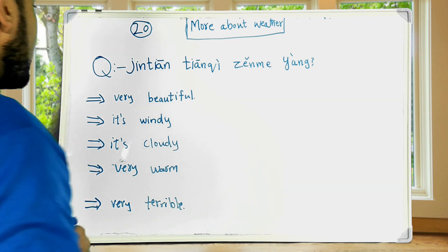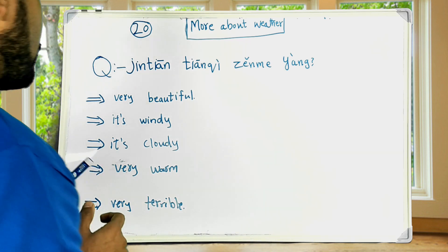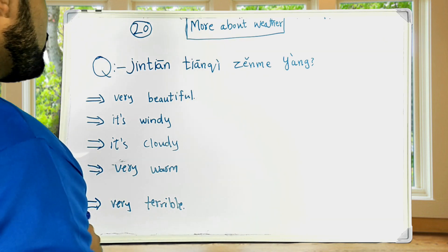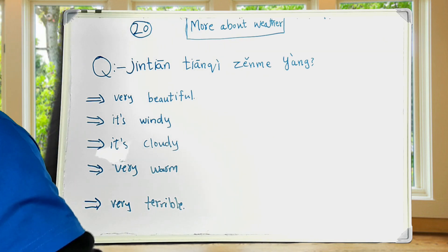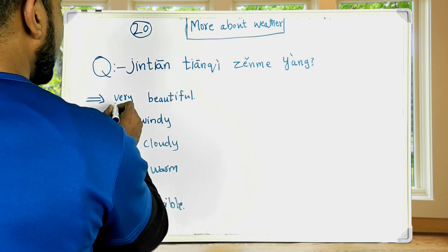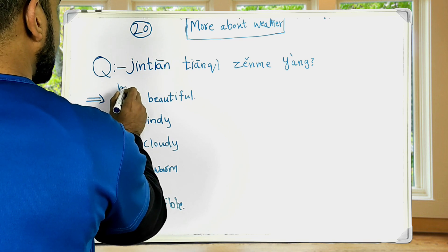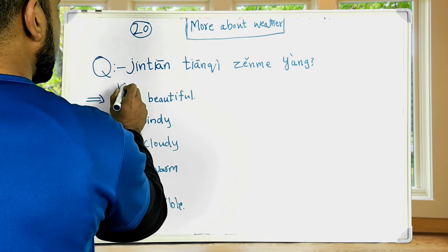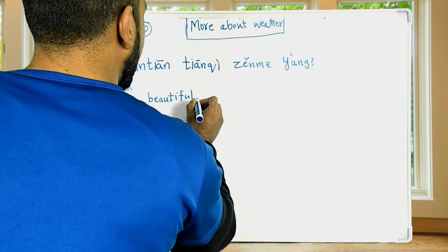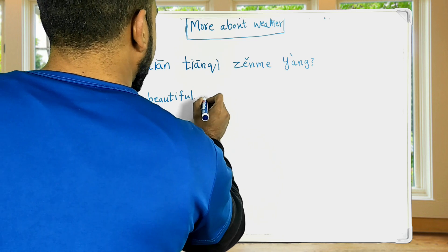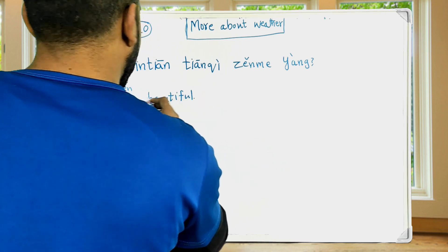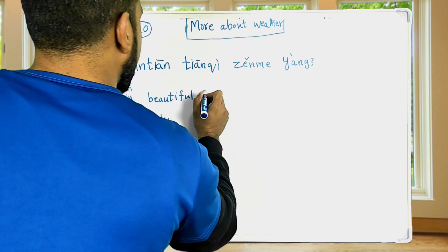Now, how do we say 'very beautiful' in Chinese? We have learned that 'very' is 很 and for 'beautiful' we use 漂亮, so the answer for this one is 很漂亮.